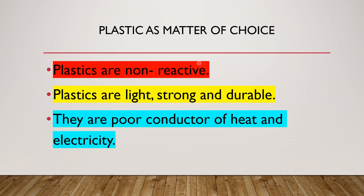Plastics as a matter of choice: plastics are non-reactive. They do not react with air, water and do not corrode easily. So they are used to store various materials including many chemicals. Plastics are light, strong and durable. They are cheaper than metal. Higher strength and light weight makes plastic a better choice for industries and household articles. They are poor conductors of heat and electricity — the handles of screwdrivers and frying pans are examples. Teflon is a special plastic on which water and oil do not stick; it is used for non-stick coating on cookware.